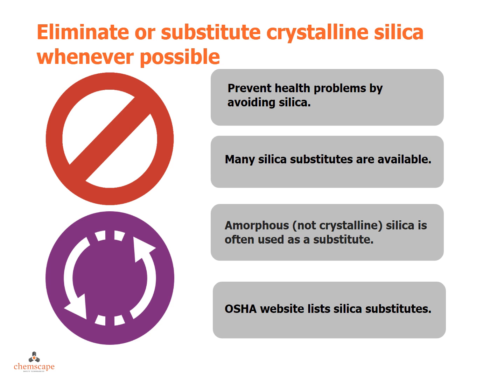The best way to prevent health problems related to silica dust is to avoid silica altogether. Many silica substitutes are available and appropriate for many applications. At the hardware store, take note of silica-free sand for playgrounds or silica-free blasting media. Amorphous — not crystalline — silica is a separate type of silicon dioxide, often used as a substitute. Amorphous silica does not appear to cause serious health effects. The OSHA website provided at the end of this video has listed silica substitutes, along with recommended applications, advantages and limitations, and price.